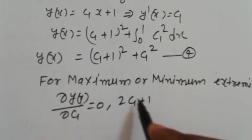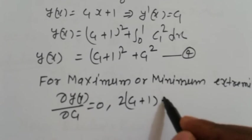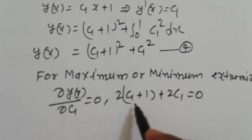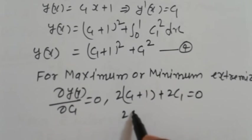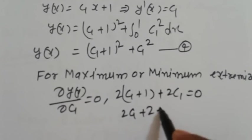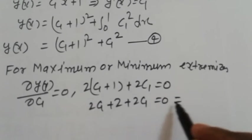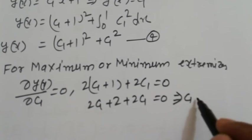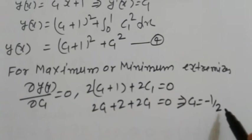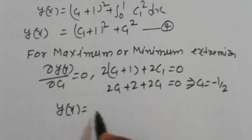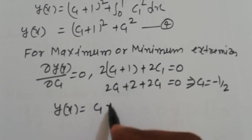So now we get 2(C₁ + 1) + 2C₁ = 0. Simplify here: 2C₁ + 2 + 2C₁ = 0, imply that C₁ = -½.